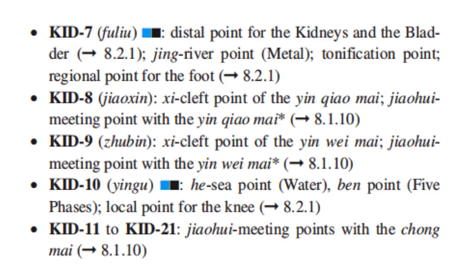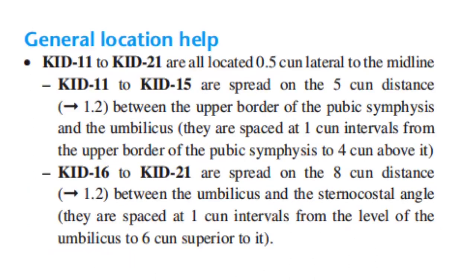Kidney 11 to Kidney 21 are the jiao hui meeting points with the Chong Mai. General location: Kidney 11 to 21 are all located 0.5 cun lateral to the midline. Kidney 11 to 15 are spread over the five cun distance between the upper border of the pubic symphysis and the umbilicus, spaced at one cun intervals. Kidney 16 to 21 are spread over the eight cun distance between the umbilicus and the sternocostal angle, spaced at one cun intervals from the level of the umbilicus to six cun superior to it.